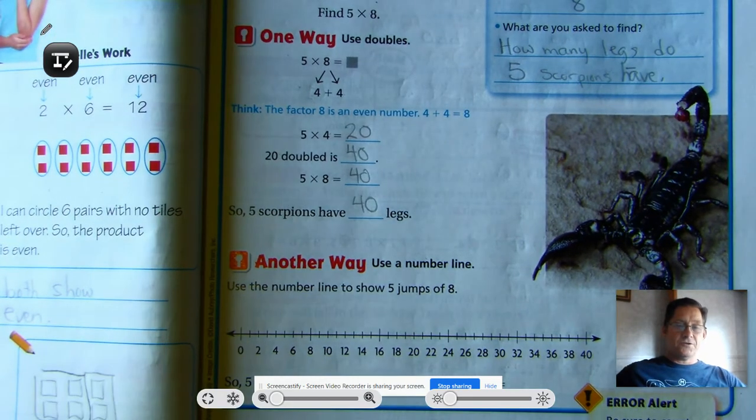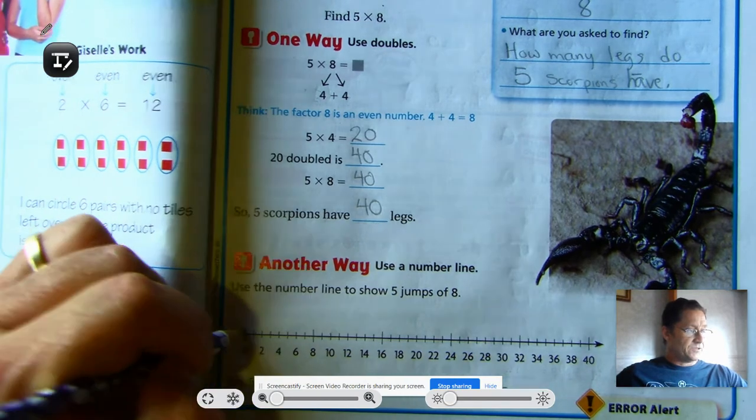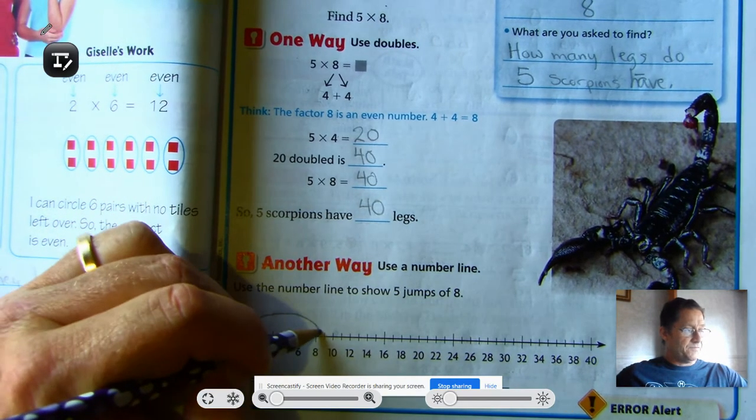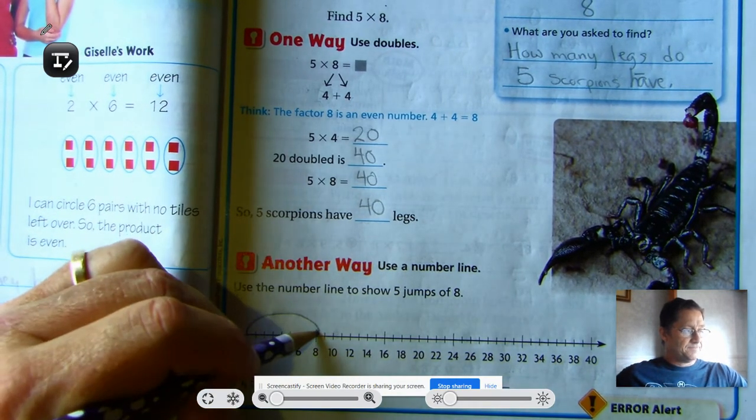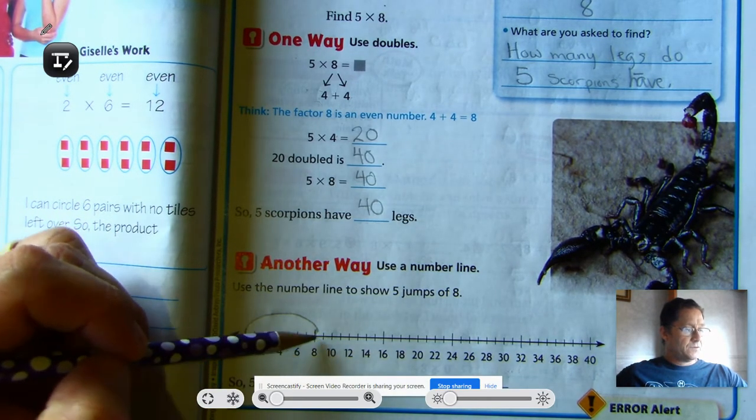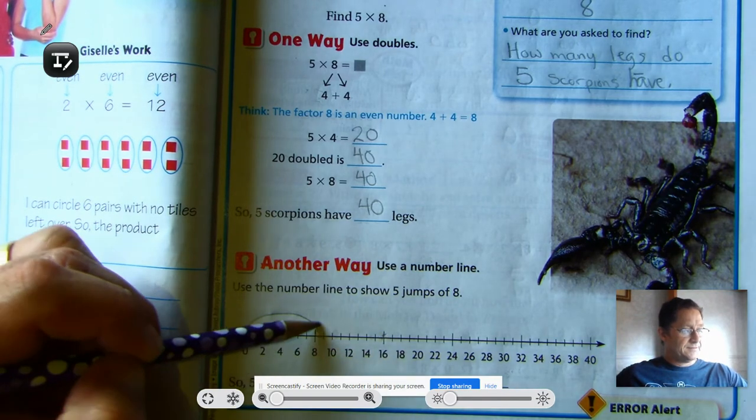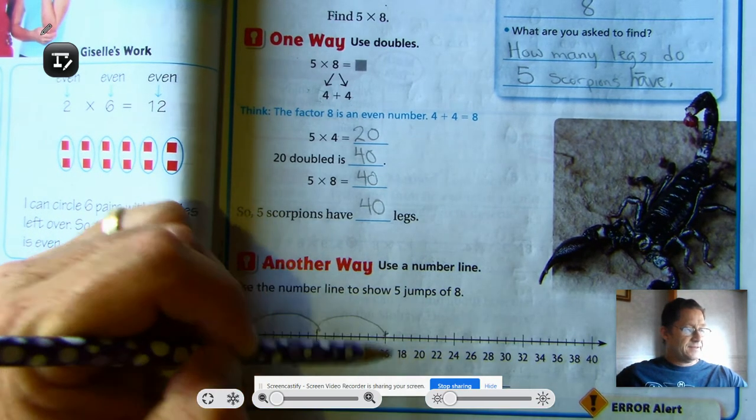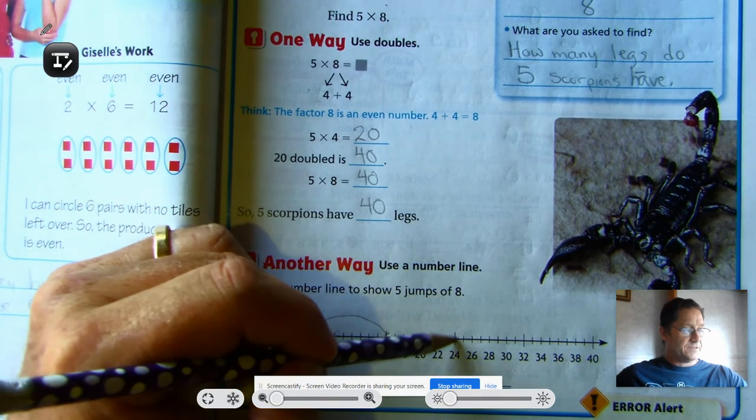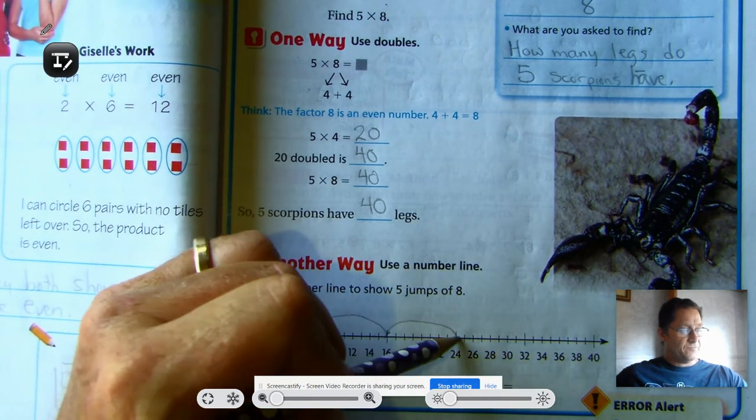Alright, we can use a number line to show 5 times 8 or 5 jumps of 8. So we start at 0 and we jump 8. Then we jump 8 more. Which will be 2, 4, 6, 8. So we stop at 16. Then we go 2, 4, 6, 8. We stop at 24. 2, 4, 6, 8. We stop at 32.